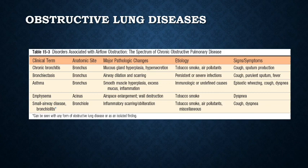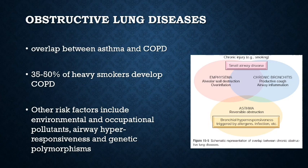This table lists the common obstructive lung diseases. Emphysema and chronic bronchitis are referred to as COPD, or chronic obstructive pulmonary disease. Note that smoking is a common cause of COPD. Asthma is distinguished from chronic bronchitis and emphysema by the presence of reversible bronchospasm, though some patients with typical asthma also develop an irreversible component. Conversely, some patients with typical COPD have a reversible component. COPD is a major public health problem — about 35 to 50% of heavy smokers develop COPD, and 80% of COPD is due to smoking.